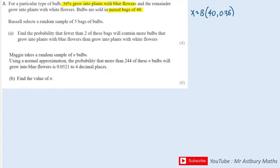The number of trials will be 40 because there are 40 bulbs in each bag and the probability that we're going to get a single blue will be 0.36. What we want to work out is the chance of getting a bag which has more bulbs that grow into blue than grow into white. So I need to work out the probability that X is greater than or equal to 21 blue bulbs, because if it were 20 blue bulbs that wouldn't be more blue bulbs than white bulbs. So I need 21 or more.